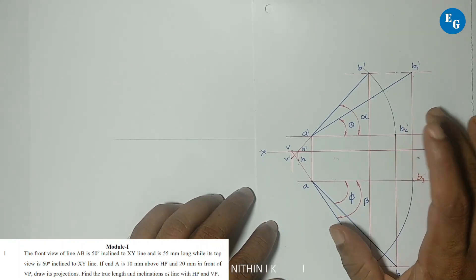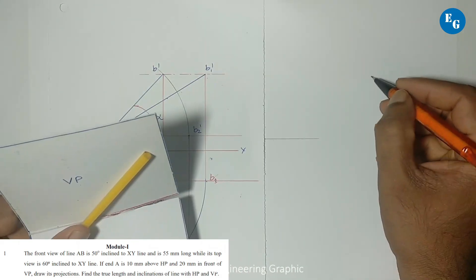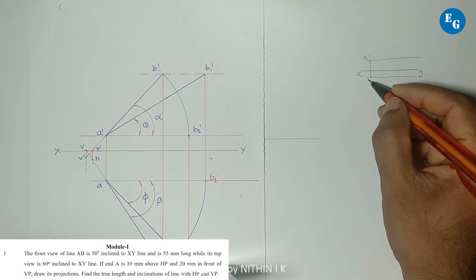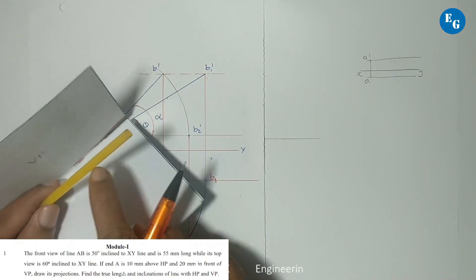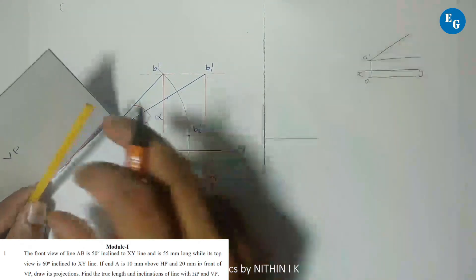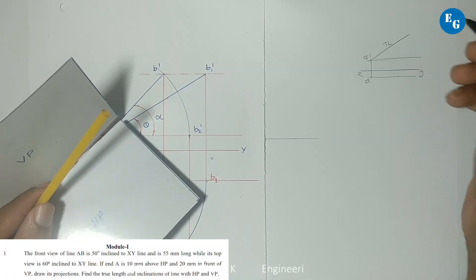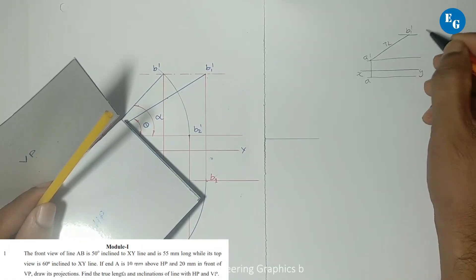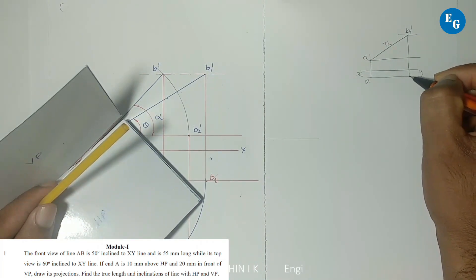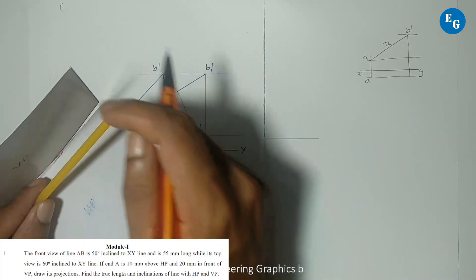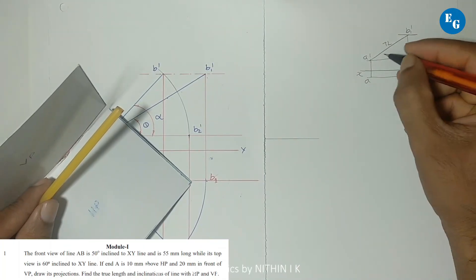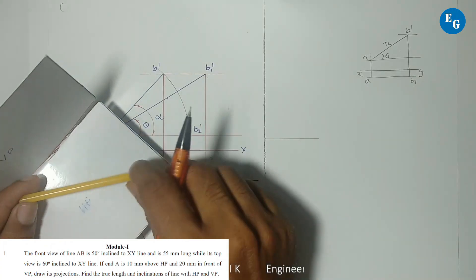This figure is a reference figure. The line is parallel to VP. The true length mark is A dash B1 dash. B1 dash is the position of B in the top view. A and B are the same distance in front. The line is parallel to the XY line. The inclination is theta, and the line is parallel to HP.